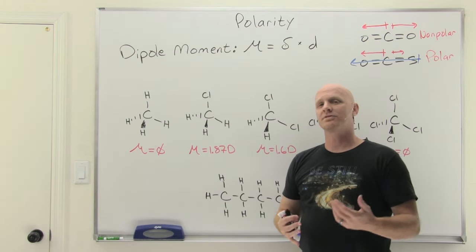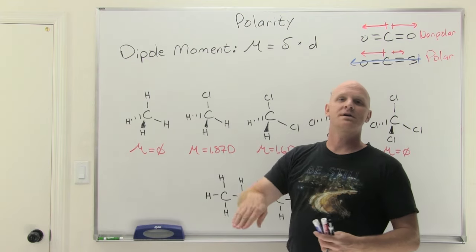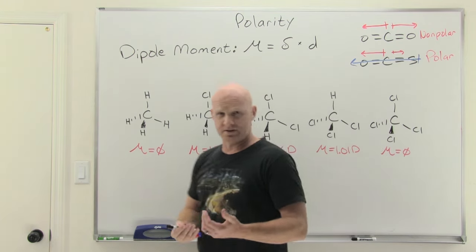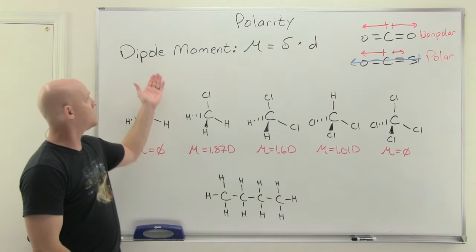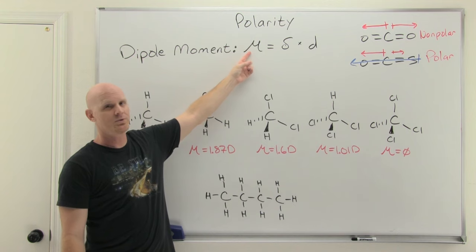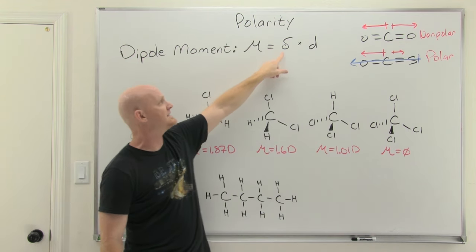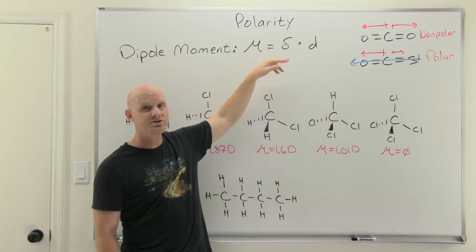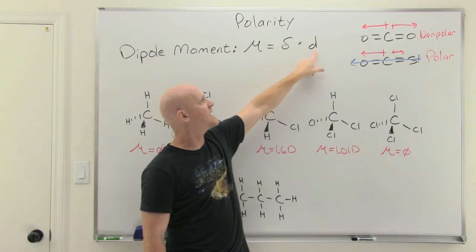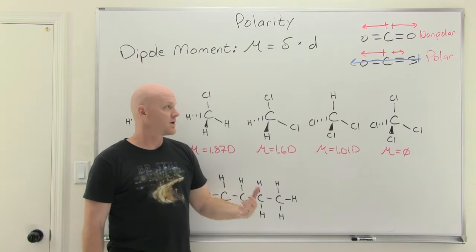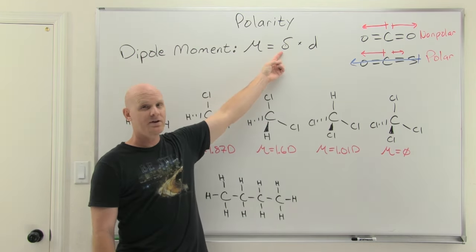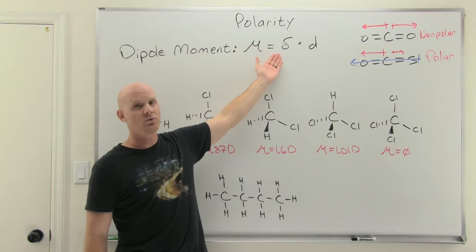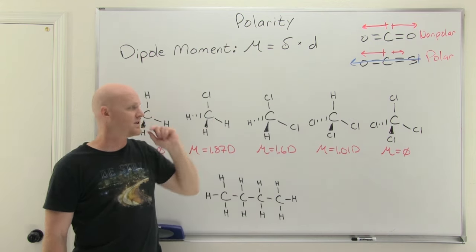In addition to identifying if a molecule is polar or not, you might have to compare relative polarities, which is why I've got this series of molecules. A measure of polarity is what's called the dipole moment, symbolized by the Greek letter mu. It's equal to the partial charges that result from the difference in electronegativity times the distance of separation between those two atoms. A bigger partial charge — the result of a bigger difference in electronegativity — leads to a more polar bond.